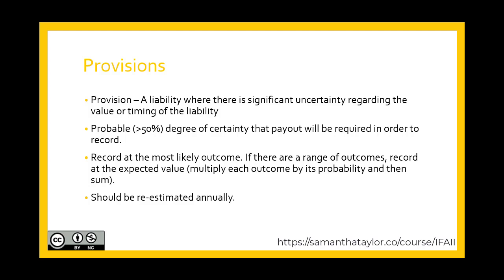Under IFRS, there is a difference. Under IFRS, it is recorded if it is likely, which means greater than 90%. And if there are a range of outcomes, it's recorded at the lowest number.